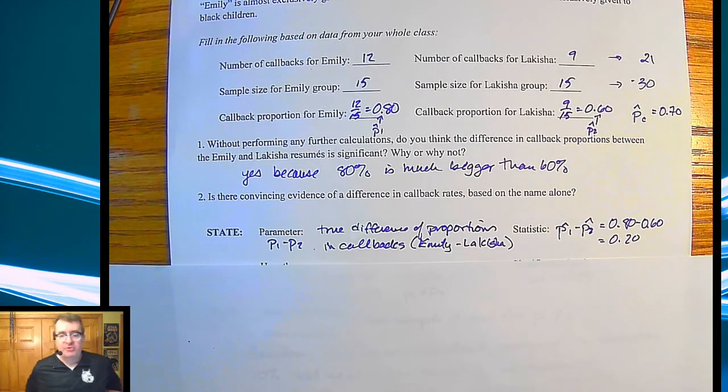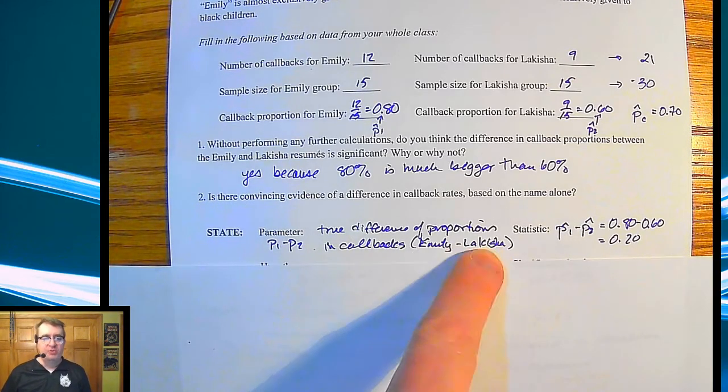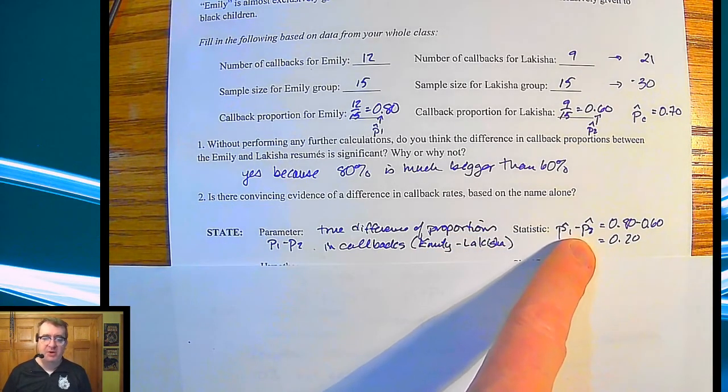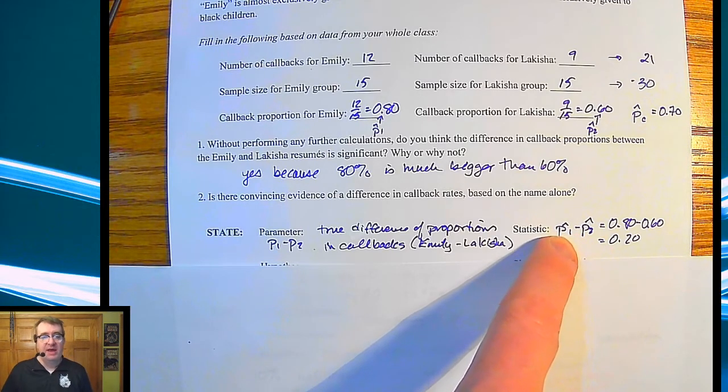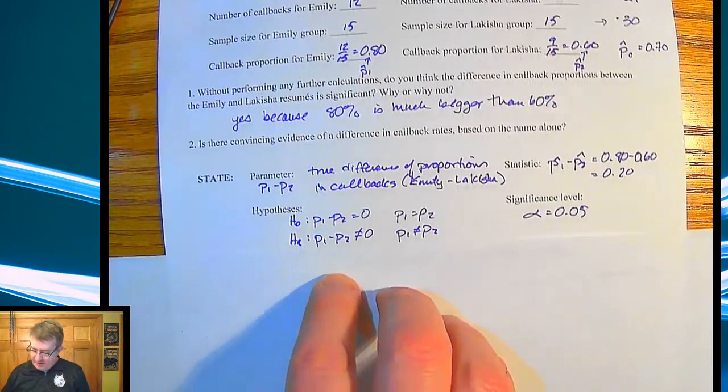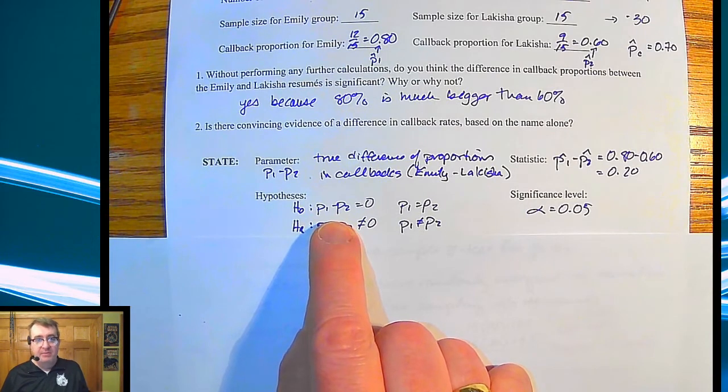So here is the setup. The parameter, true difference of proportions, that's P1 minus P2. In callbacks, that's Emily minus Lakeisha. Do you state which one you're subtracting from the other? Our statistic is over here, 80% minus 60%, which is 20, and we're labeling them as P1 hat and P2 hat.